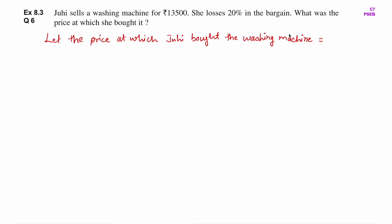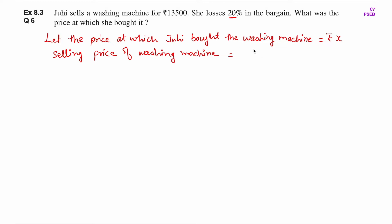Let the price at which Juhi bought the washing machine be equal to rupees x. उसको loss 20% का हुआ है. Selling price of washing machine is equal to cost price, जिसको हमने assume किया है x, minus 20% of x. Selling price ऐसे निकालते हो — cost price में से loss subtract करते हो अगर loss हो रहा है, और profit add करते हो अगर profit हो रहा है.